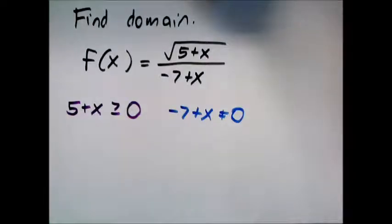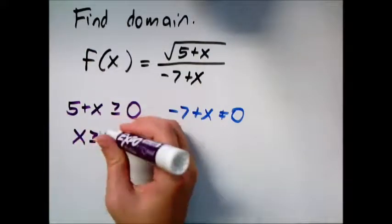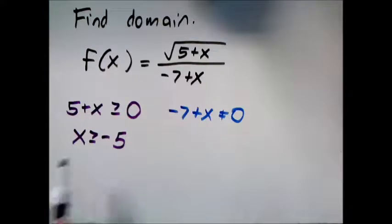Probably best to work them both out and say individually what numbers work and then we can combine that to say for the whole function what numbers do we have to pluck out. So for this we can only use numbers that are greater than or equal to negative 5. I subtract 5 from both sides to get x by itself.